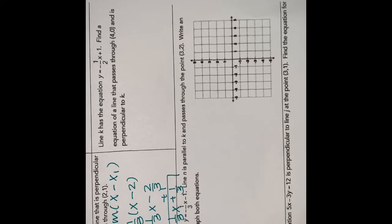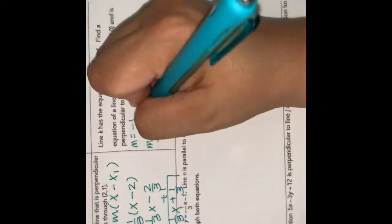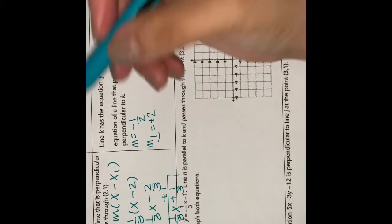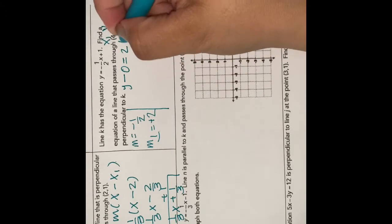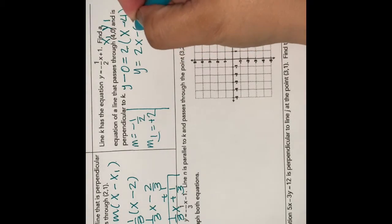Next, line k has the equation y equals negative 1 half x plus 1. Find the equation of a line that passes through (4, 0) and is perpendicular to k. The original slope is negative 1 over 2, so the perpendicular slope is positive 2. Using the point-slope formula with (4, 0): y minus 0 equals 2 times (x minus 4). So y equals 2x minus 8. That's your solution.